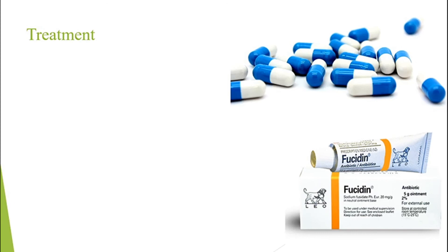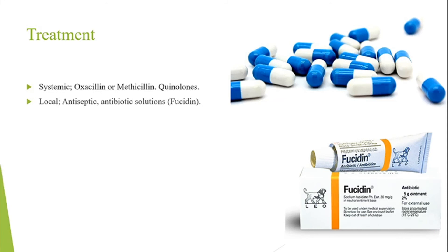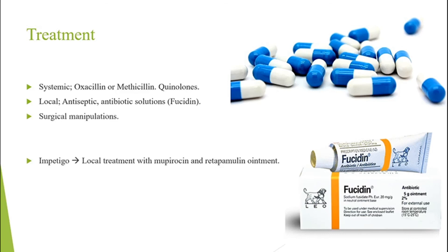Treatment: systemically, you can use oxacillin or methicillin, and quinolones can be added. For local treatment, antiseptic cream or antibiotic solutions like fusidic acid can be used. Surgical manipulation — in case of abscesses, incise and drain them. For impetigo, local treatment with mupirocin and retapamulin can also be used.